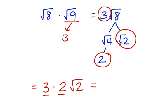We multiply 3 times 2, that equals 6. Square root of 2, and this is our final answer.